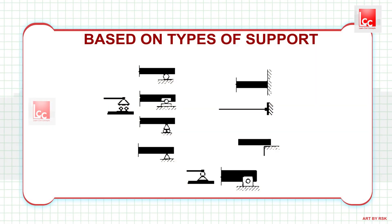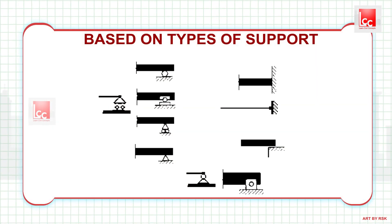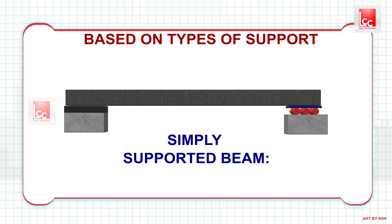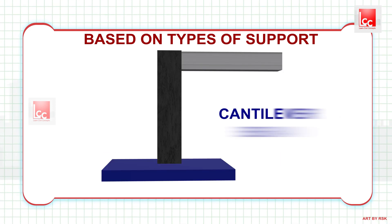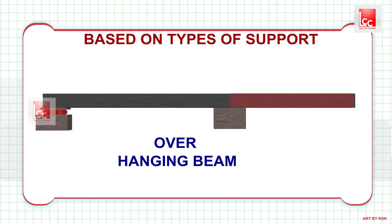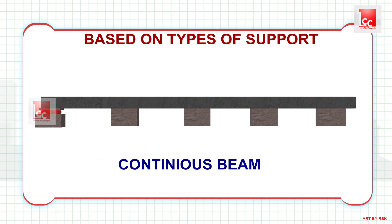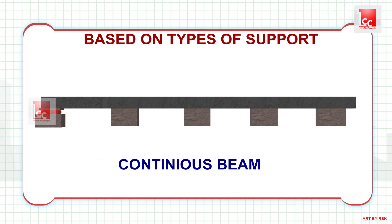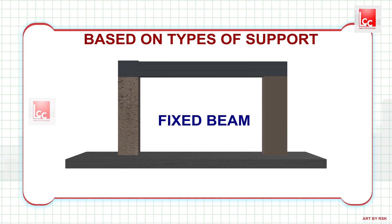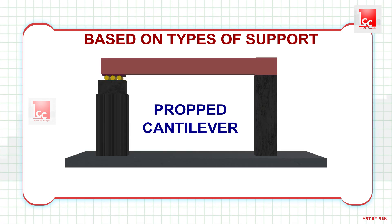Based on the type of support, beams are further classified as: simply supported beam, cantilever beam, overhanging beam, continuous beam, fixed beam, and propped cantilever.